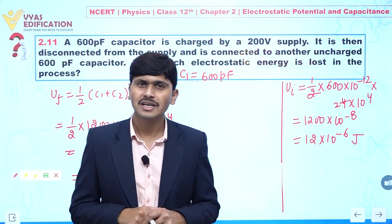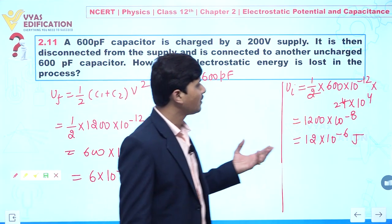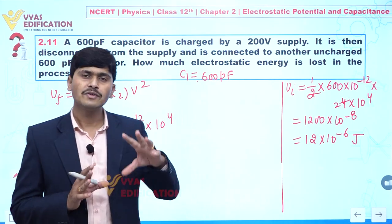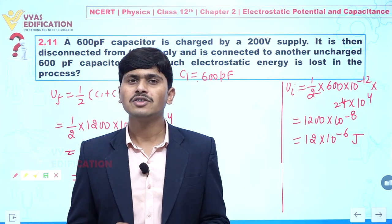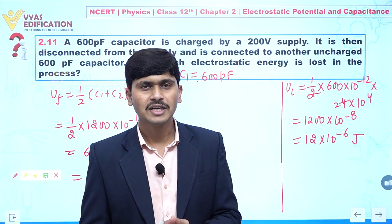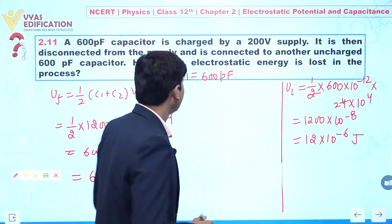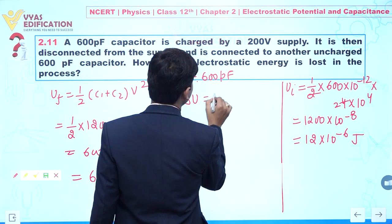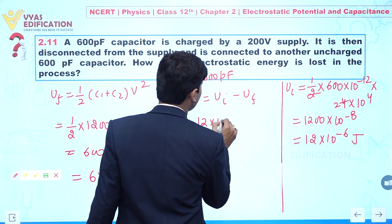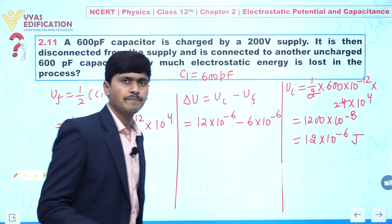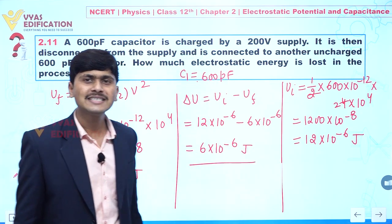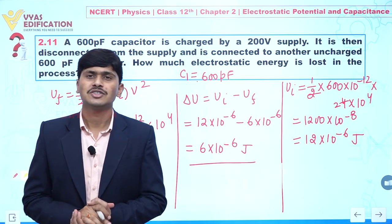The initial energy is 12 × 10⁻⁶ joule and the final electrostatic energy is 6 × 10⁻⁶ joule. When a dielectric is inserted, half the energy is stored in the capacitor and half is utilized to do work. The total energy lost is U_initial minus U_final: 12 × 10⁻⁶ minus 6 × 10⁻⁶ equals 6 × 10⁻⁶ joule. This is the total lost electrostatic energy.